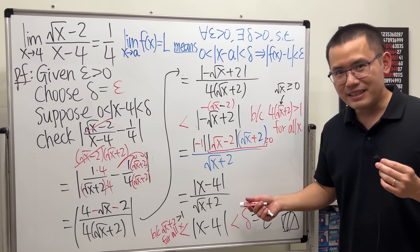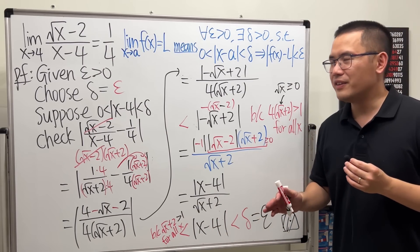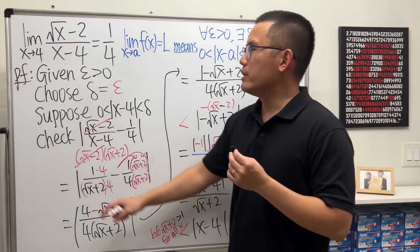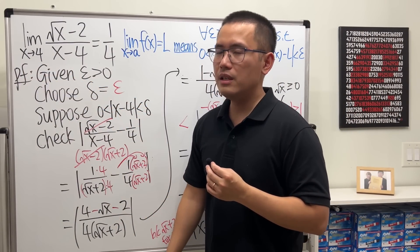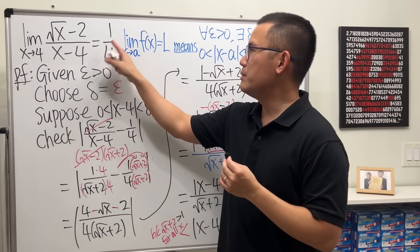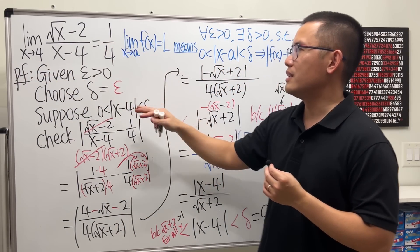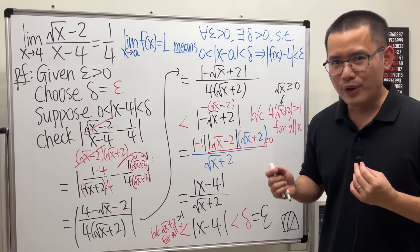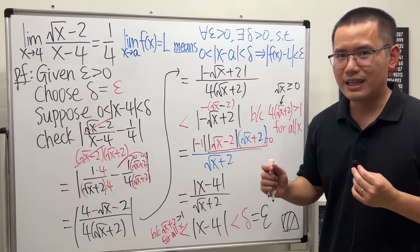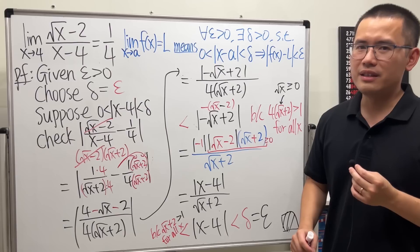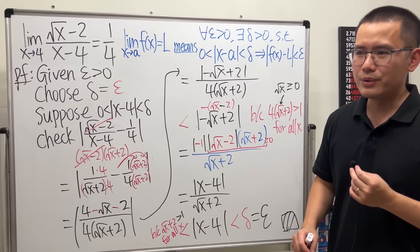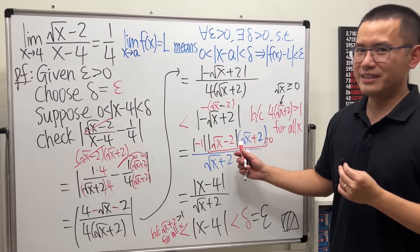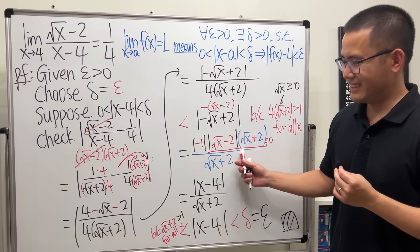If you need more help with epsilon-delta definitions — especially for x approaching infinity or limits being infinity — I have a video with 24 examples on epsilon-delta definitions. The link will be in the description. Hopefully this really helps!